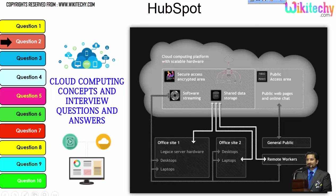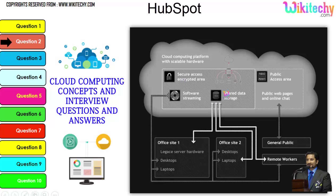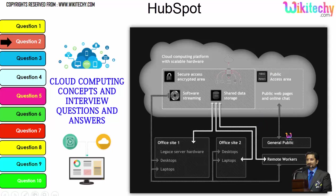Cloud computing provides a public access area with public web pages for end users, along with secure data access, shared data storage, and software streaming. Companies can use it as a private kind of environment, and the public can use it to access web pages or websites. This is how cloud computing works in terms of access.